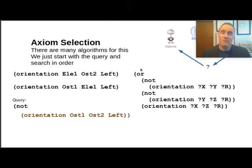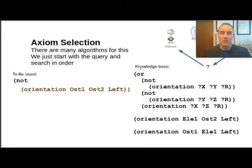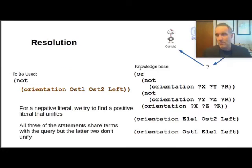This starts with axiom selection. There's a tremendous amount of work and research in good approaches to axiom selection. There's no one beautiful, perfect, universal way to choose the best statement to consider next. For the purposes of this tutorial, we're just going to pick the simplest one - just pick the next one that's available and try it out. We start with a list we'll call to be used or TBU. Our knowledge base is all the things we know.